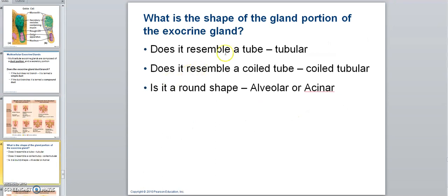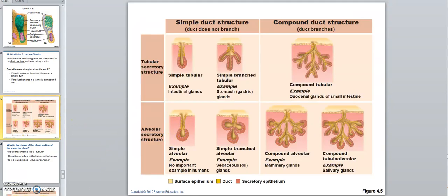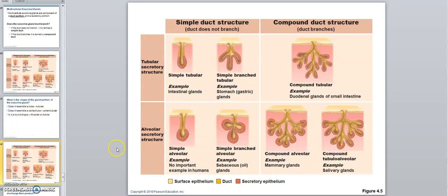So we have different shapes. To summarize: does the duct branch, and what is the shape of the gland? The duct is classified as simple or compound, and the gland shape as tubular or alveolar.